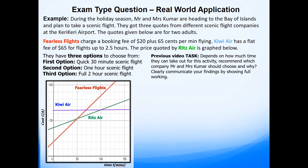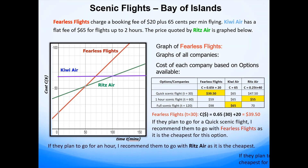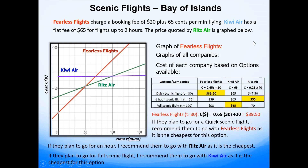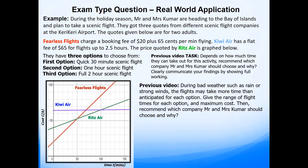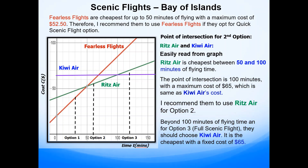In the previous video for Achieved we looked at this problem — please do check that video out. The task was to recommend which company Mr. and Mrs. Kumar should choose, depending on how much time they can take out for the activity, and to communicate findings clearly by showing full working. For Merit, we looked at the impact of flying time on cost. I'll put the answer up here for you to have a look, but I would strongly advise you to watch the other two videos.